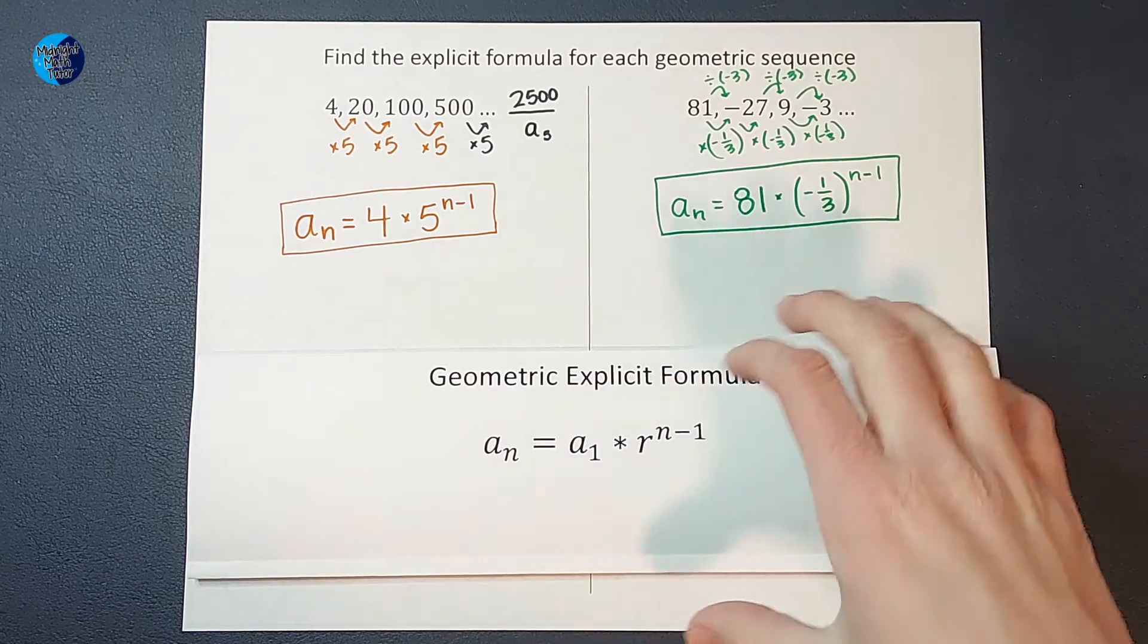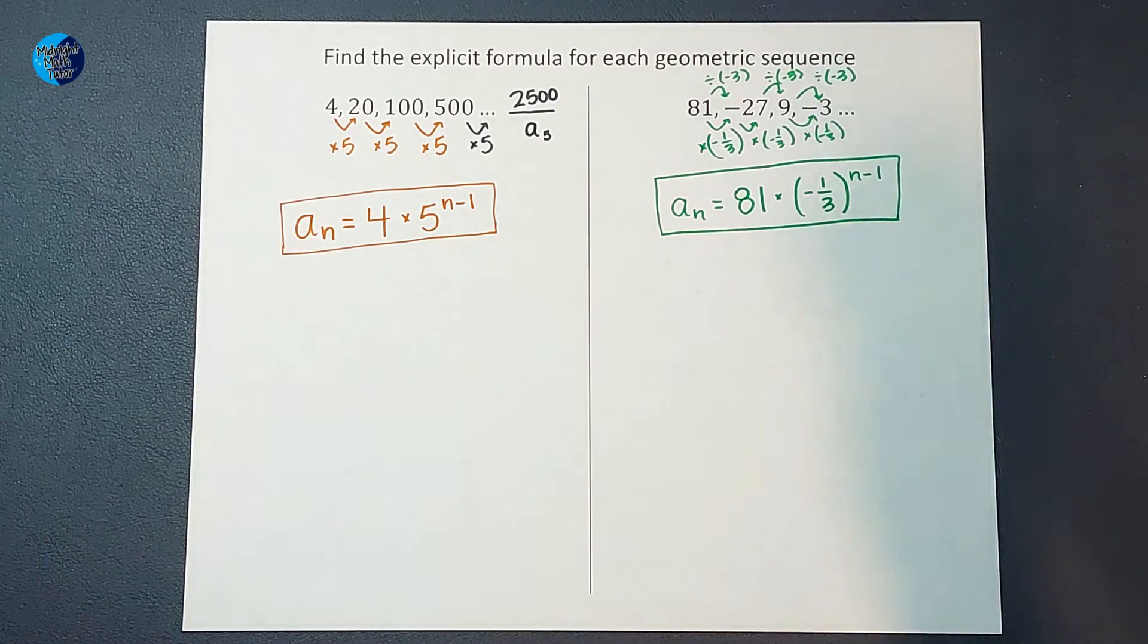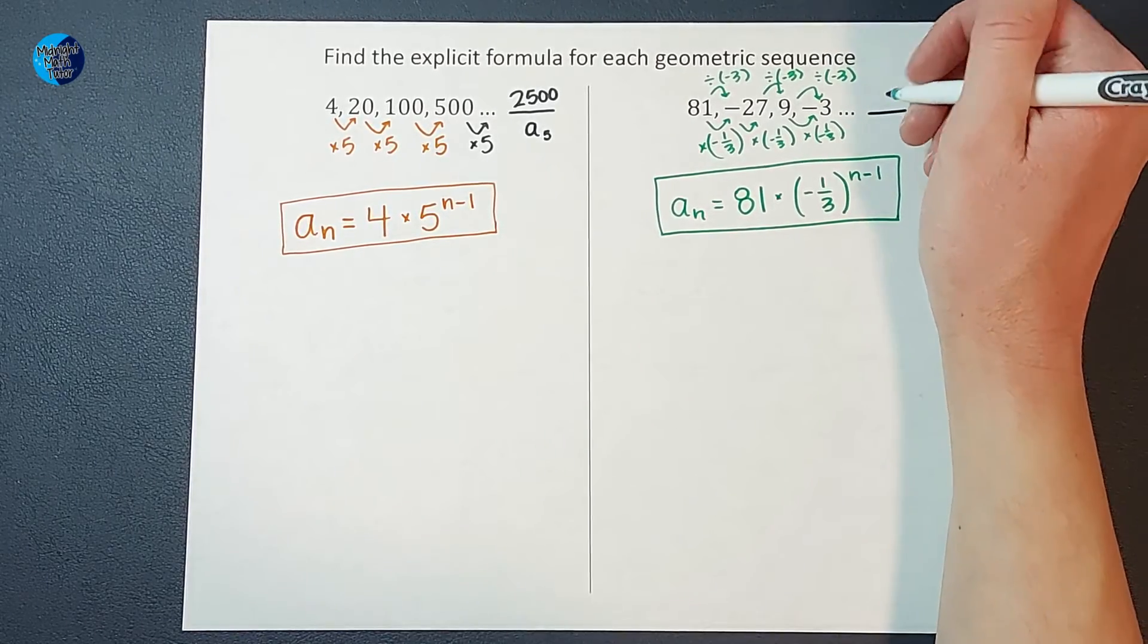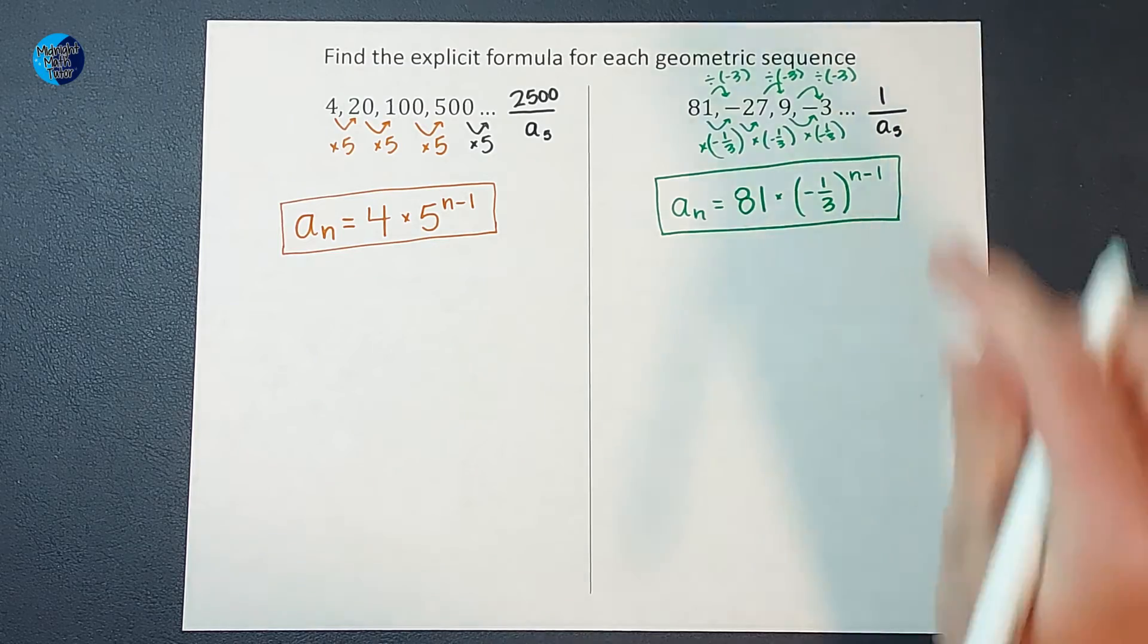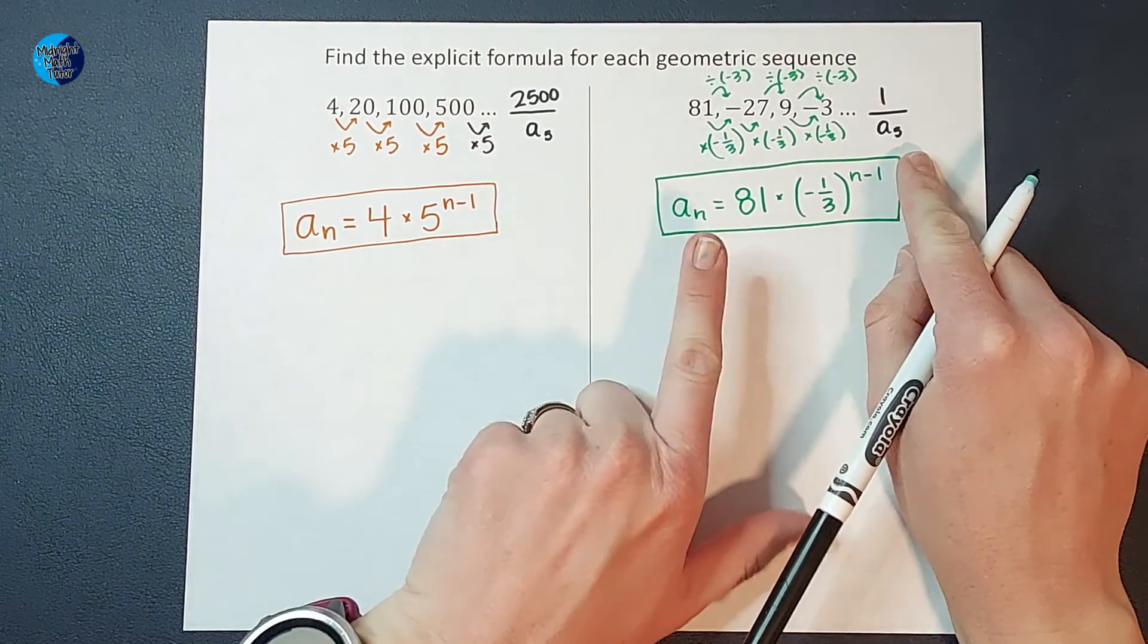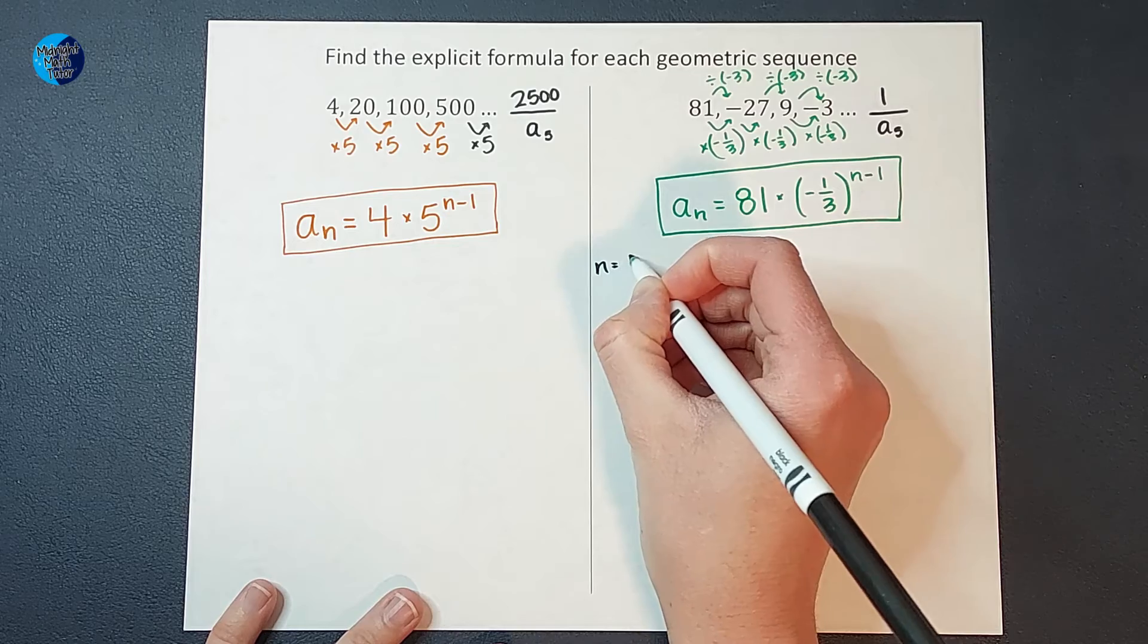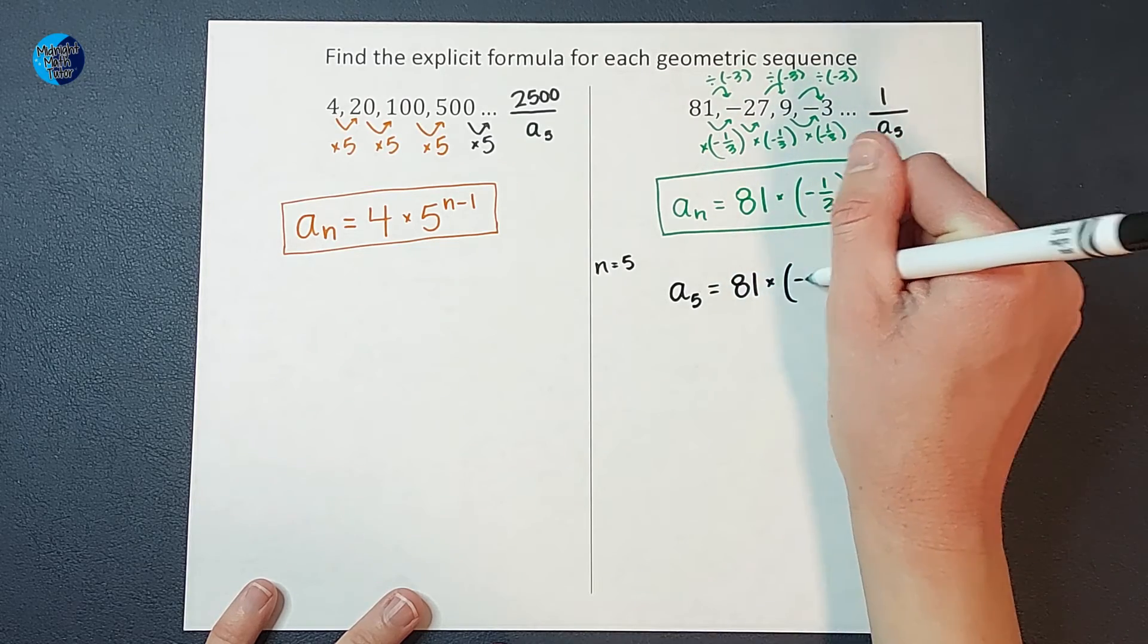Now, if you want to check yourself, I love to check myself, especially because, hey, I make math videos and I want to make sure that I am giving you guys correct information. So oftentimes I will check myself to make sure. So if I were to figure out the fifth term manually, you could say, I would divide by negative 3 again, or you could say multiply by negative 1 3rd. And I would end up with 1 here, right? So a sub 5 in this example is 1.